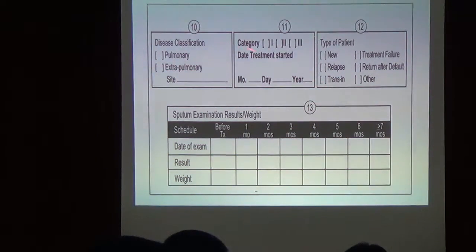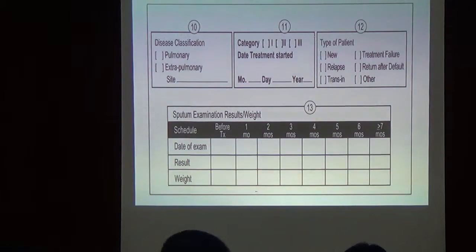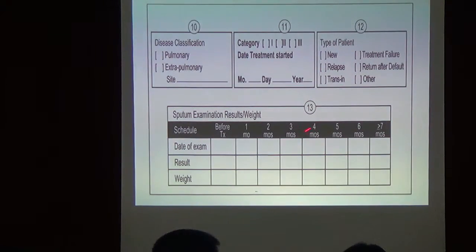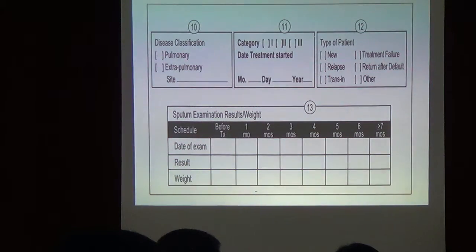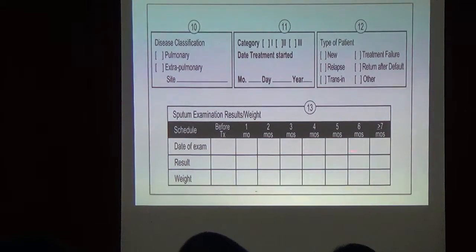The category is either one or two — no more category three in the new protocol. Record the start date of treatment. Type of patient and registration group are also recorded: new, relapse, treatment after default, treatment after failure, treatment after follow-up, or treatment outcome unknown. Before leaving, make sure the treatment partner has the dates filled in — those are the dates we will follow.